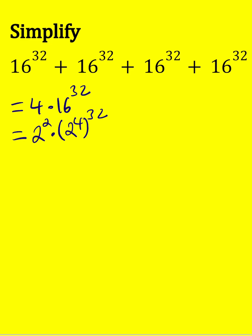It's a superpower property, so we're going to multiply the exponents. That's 2 to the second multiplied by 2 to the power 4 times 32, which is 128. When you add the exponents, which is the basic rule, it gives us 2 to the power 130.